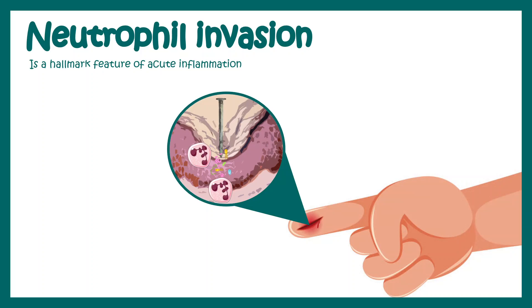Neutrophil invasion is the hallmark feature of acute inflammation. For example, if you have a small cut in your hand, there would be some inflammation in a minor quantity, and one of the hallmark features would be neutrophil infiltration in that particular area. If you don't know what acute inflammation is, you can watch my video on acute inflammation.